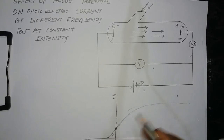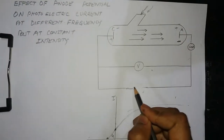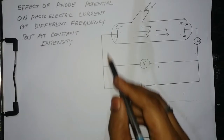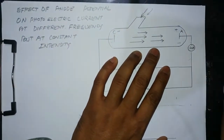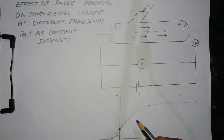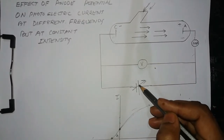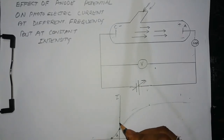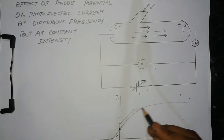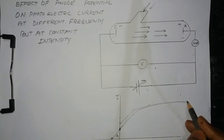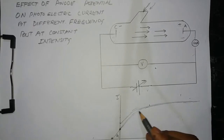Now I am going to increase the frequency to ν₂. At this new frequency, with the applied potential difference, we get some photoelectric current. As we start increasing the potential, the photoelectric current is also increasing.